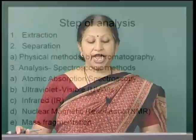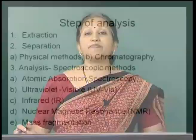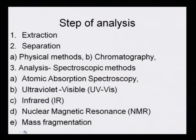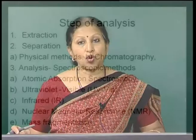Steps of analysis – there are just three of them. The first step is extraction, where we take out the analyte into a medium from where it can be analyzed. The second step is the process of separation, which could be a physical method or by chromatography. The third step is related to spectroscopic methods: atomic absorption spectroscopy, UV-visible spectroscopy, infrared or IR spectroscopy, nuclear magnetic resonance NMR spectroscopy, or mass spectroscopy – either of them or all of them. Any mistake in any one of these steps can lead to wrong results.